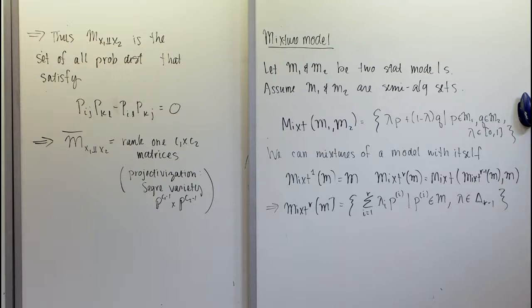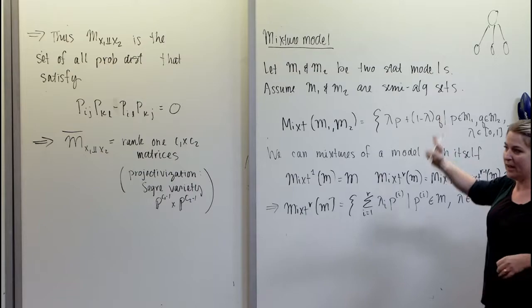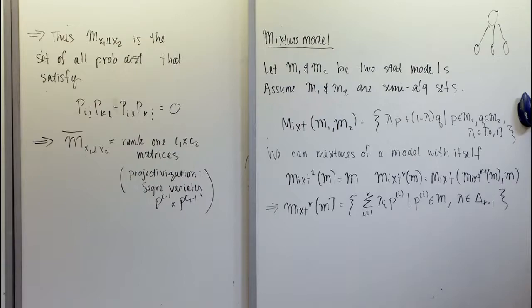Other examples include mixtures of Gaussians, which came up last week. That's outside our discrete setting. There was also the topic model — the claw tree representation — which is related to the type of mixture models we're looking at. Our first example: what happens when we take the mixture of a bunch of independence models?